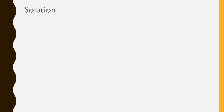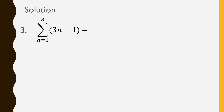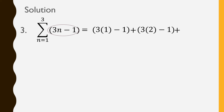Let's proceed to the third summation: the sum of 3n minus 1 as n goes from 1 up to 3. Here we have a binomial, so you have to properly substitute the value of n. Our n values go from 1 to 3. Substituting into the expression 3n minus 1: we have 3 times 1 minus 1 for the starting point, plus 3 times 2 minus 1 for n equals 2, plus 3 times 3 minus 1 for the last term.